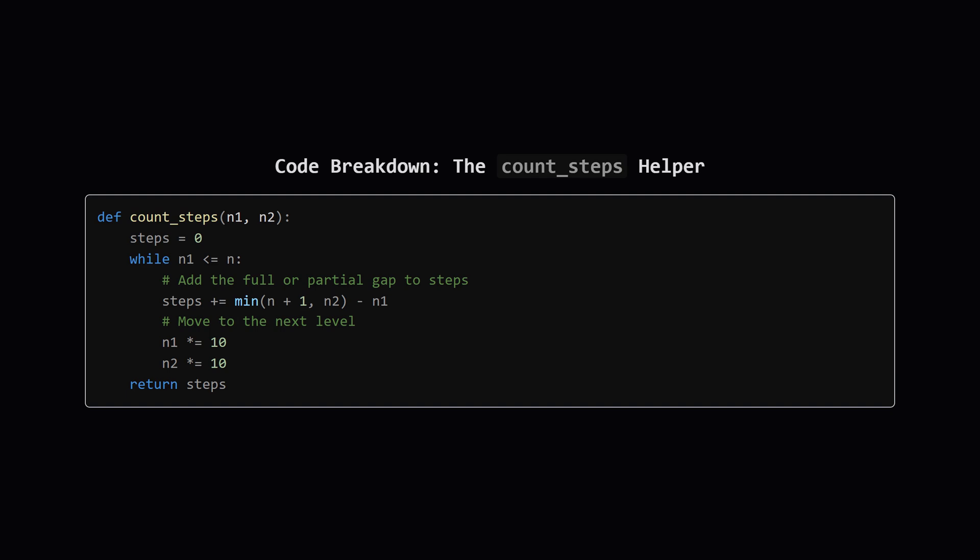In each step of the loop, it calculates how many valid numbers are in the current level. It's the smaller of either n plus 1, or the start of the next group, minus the start of the current group. We add this count to our total. Then, we move to the next level down by multiplying both boundary numbers by 10. Finally, it returns the total count.